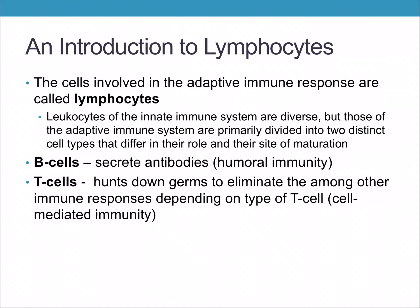B cells — B for bone marrow — secrete antibodies and are associated with humoral immunity, also called antibody-mediated immunity. T cells — T for thymus — hunt down pathogens and produce immune responses. So B and T lymphocytes are formed, matured, and activated as distinct components of the immune system.